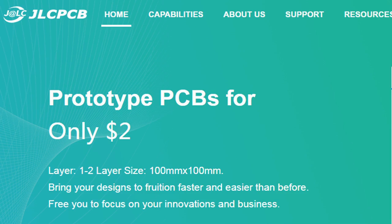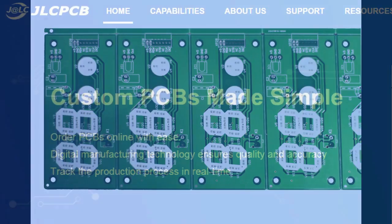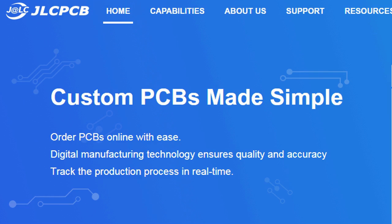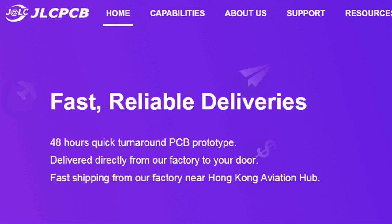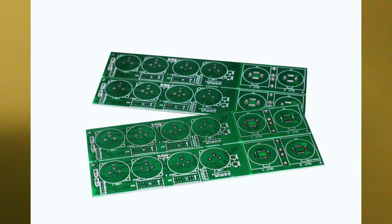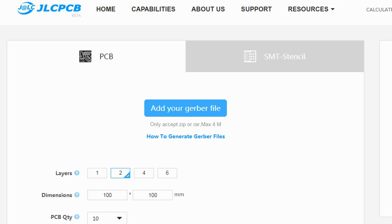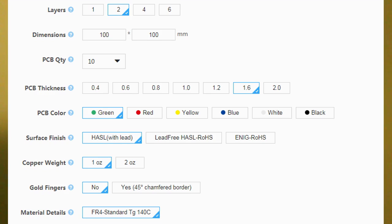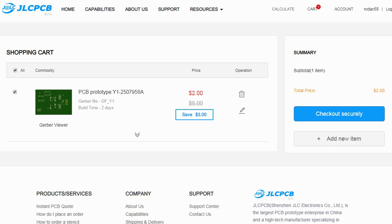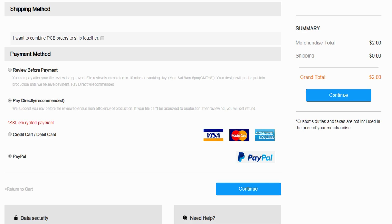This video is sponsored by JLCPCB. JLCPCB is a company that makes excellent quality PCBs at an unbeatable price. You can order boards online in minutes. After registration, upload your Gerber files, select the PCB properties, select the payment method and place your order.